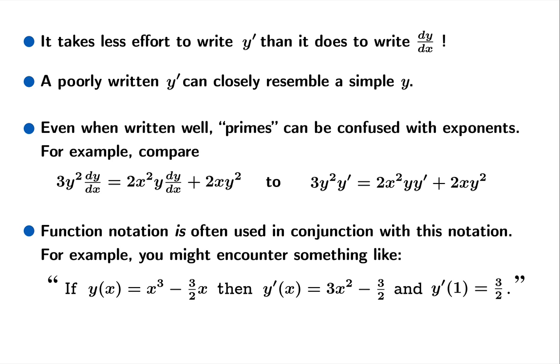Function notation is often used in conjunction with this variation of the Lagrange notation. So you might see a sentence that runs something like this: If y of x equals x cubed minus 3/2 x, then y prime of x equals 3x squared minus 3/2, and y prime of 1 equals 3/2. So this variation of the Lagrange notation does have that going for it. That's often a way it is used in discussions about derivatives.